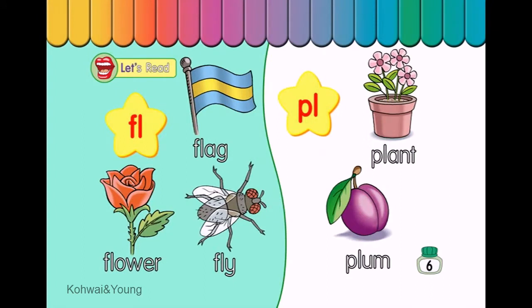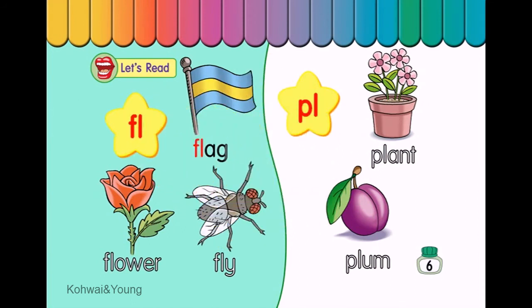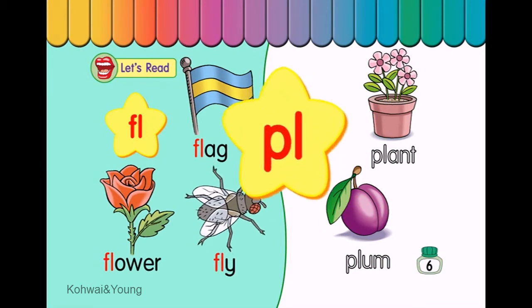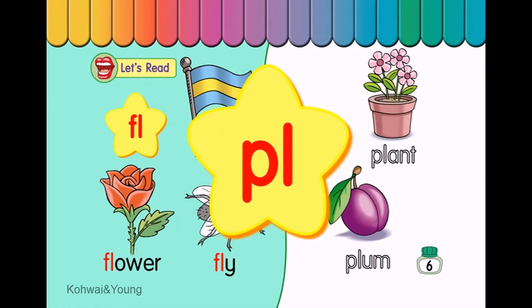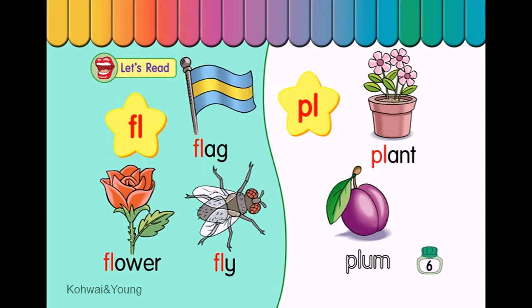Let's read. Fl — Flag. Flower. Fly. Pl — Plant. Plum.